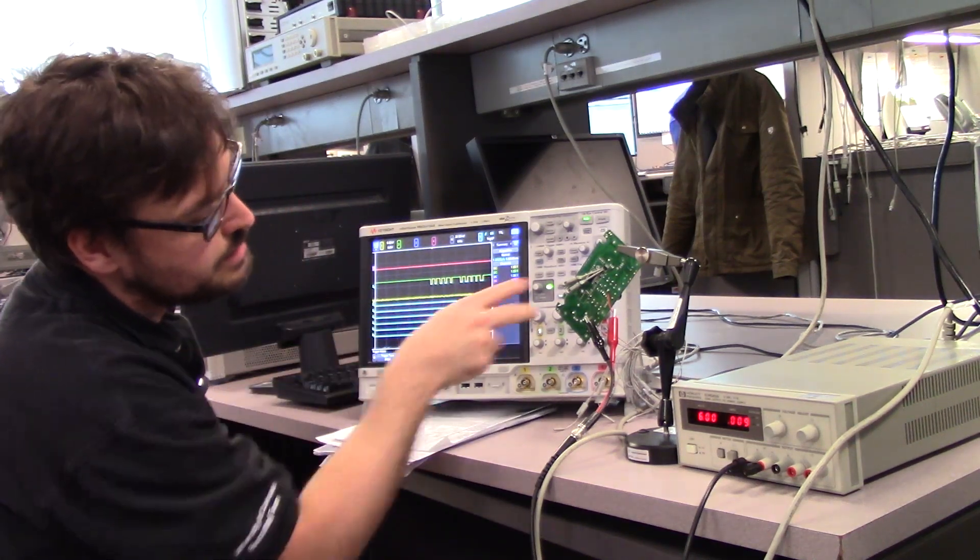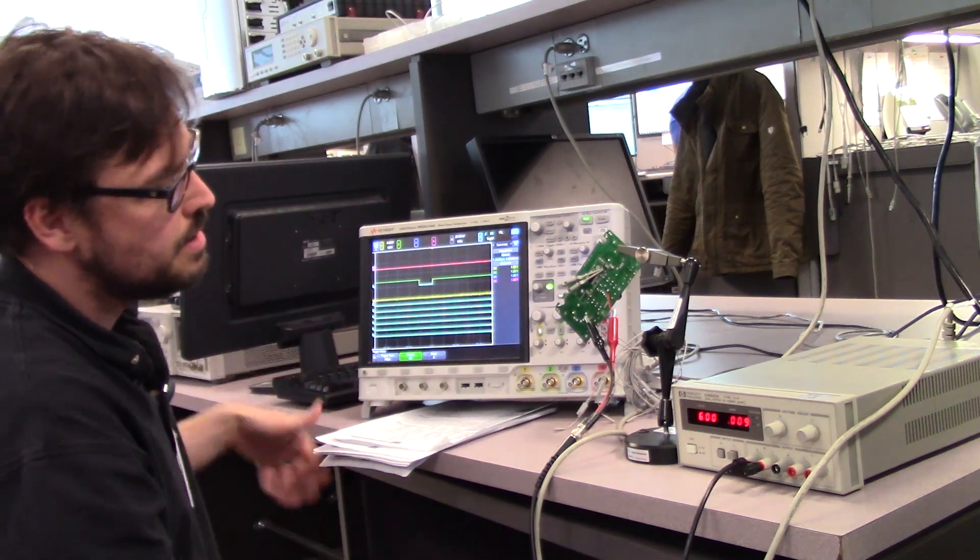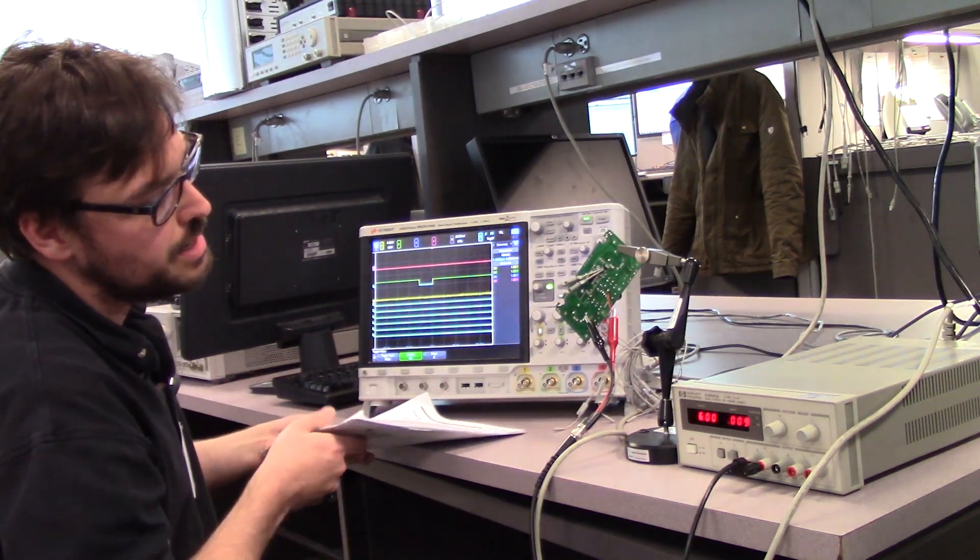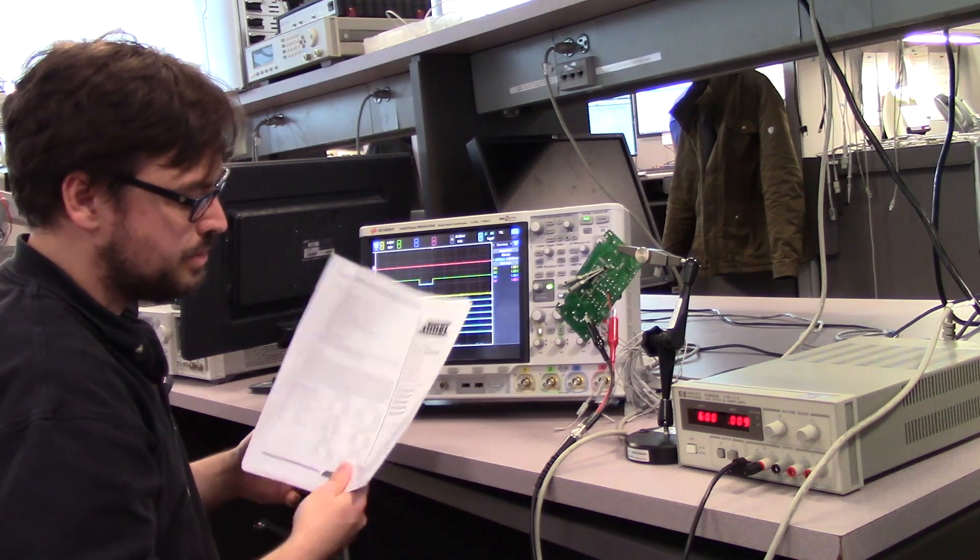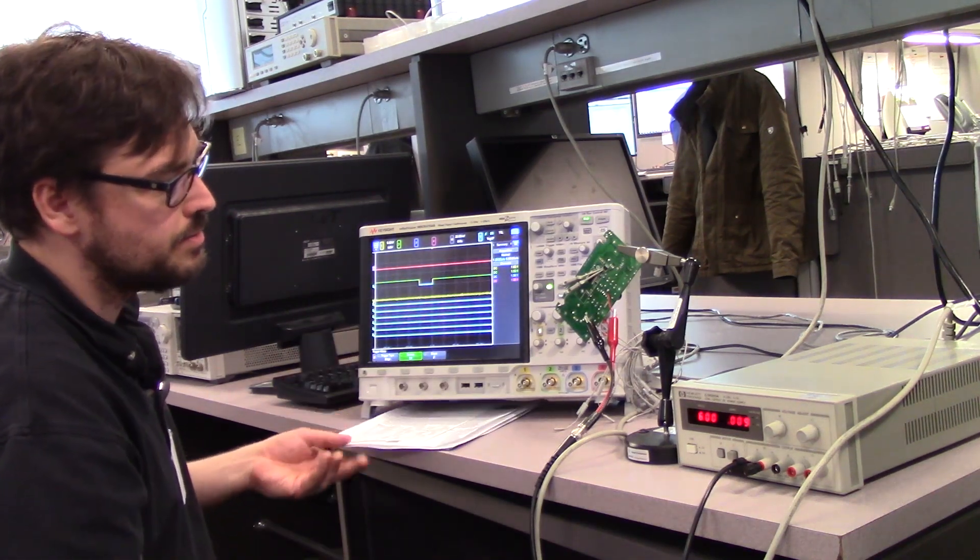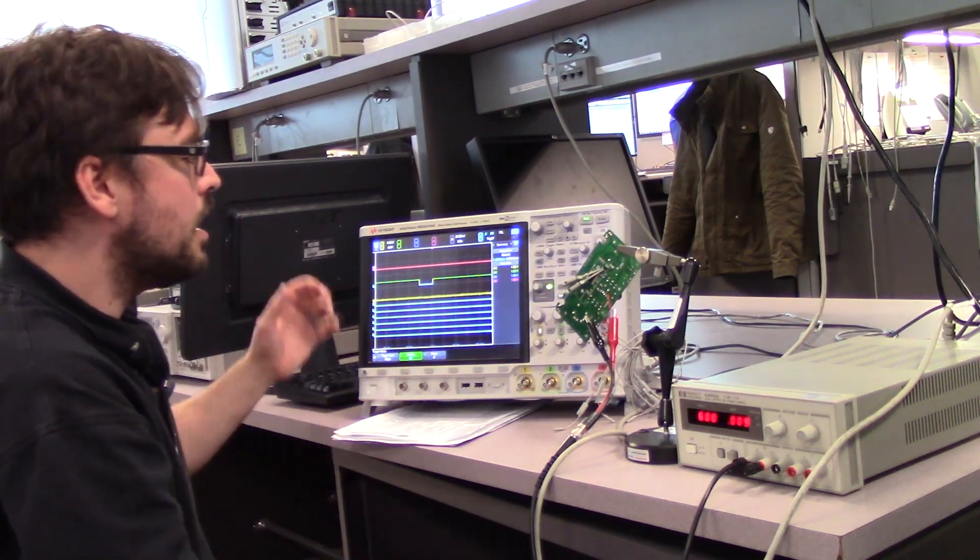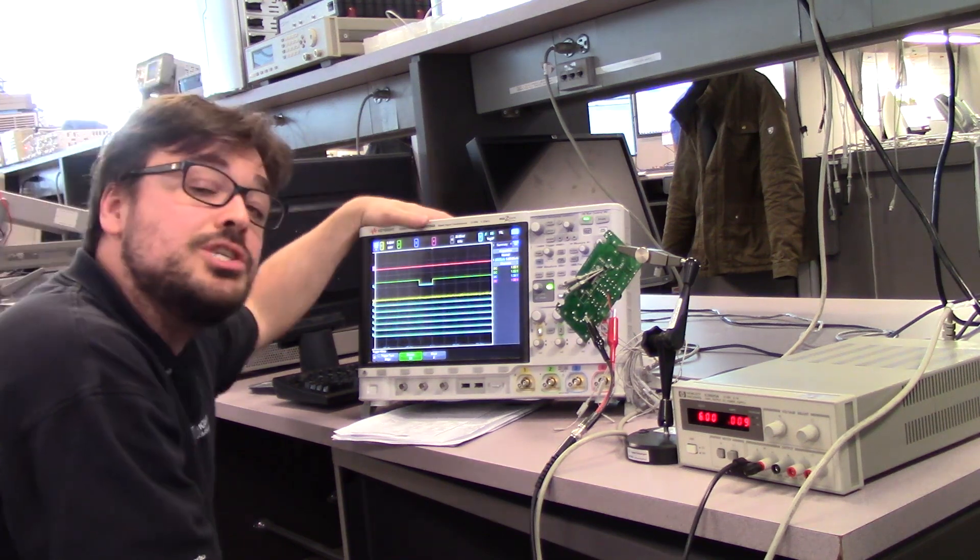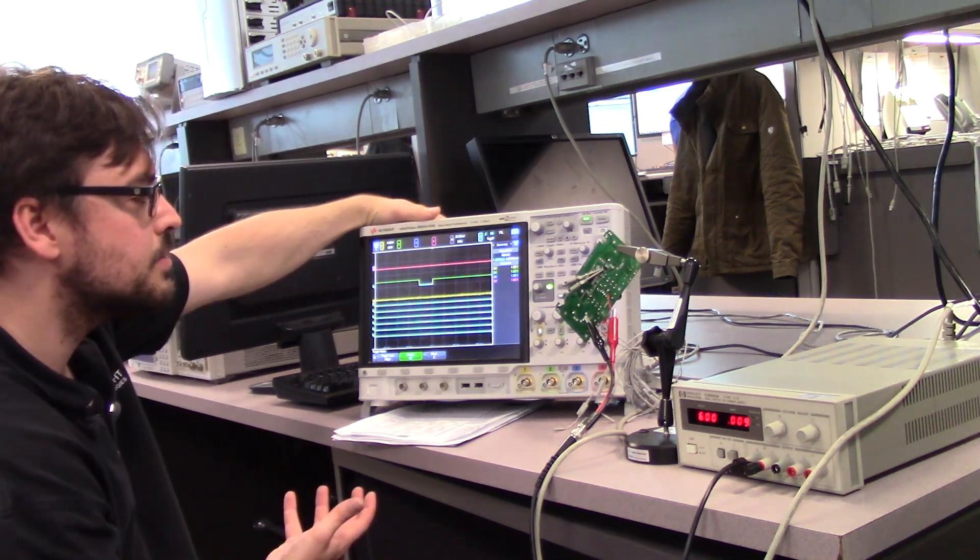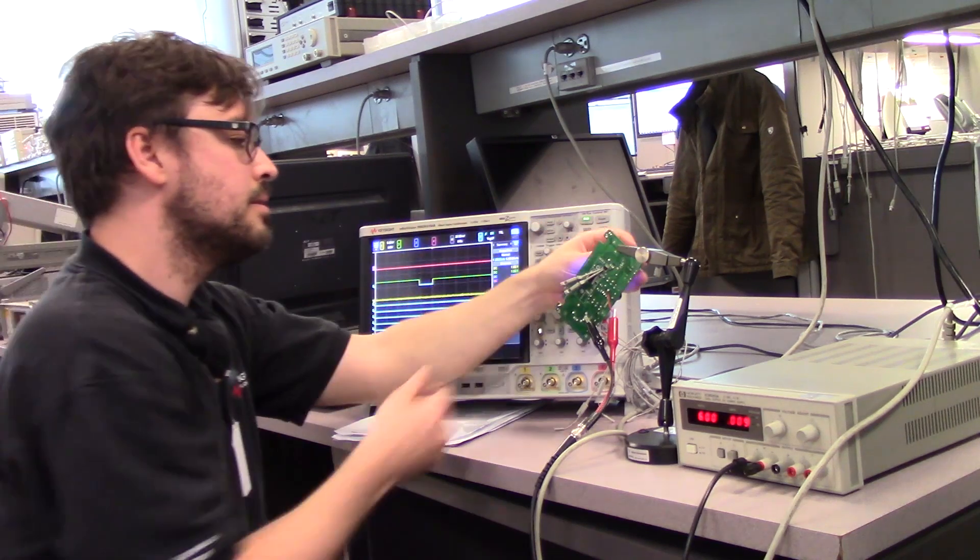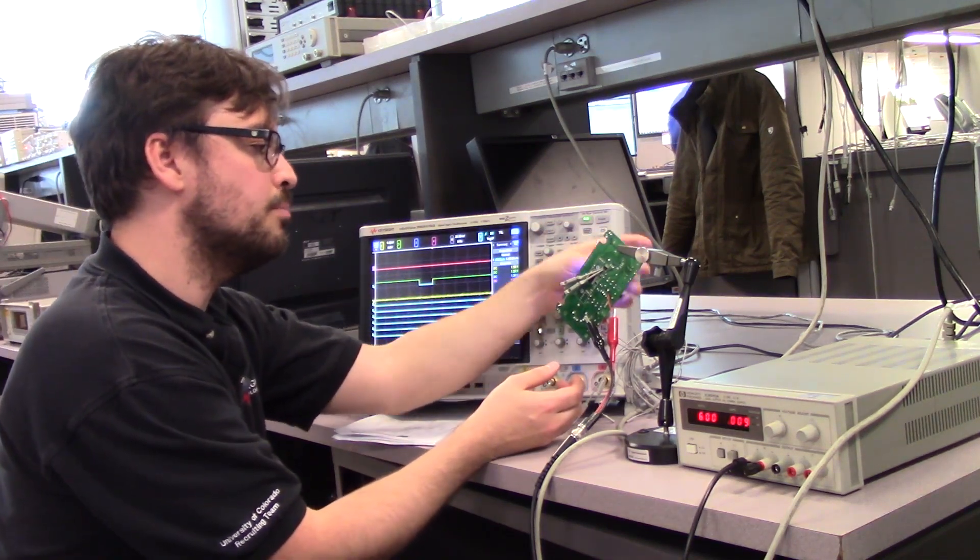And I've got these micrograbbers connected to pins on an Atmel 259 microcontroller. So I've printed out the datasheet to make sure that I've got the pin out right. And I'm currently triggering on digital channel zero to see what's going on and to see what kind of activity occurs when I perform certain functions on this board.